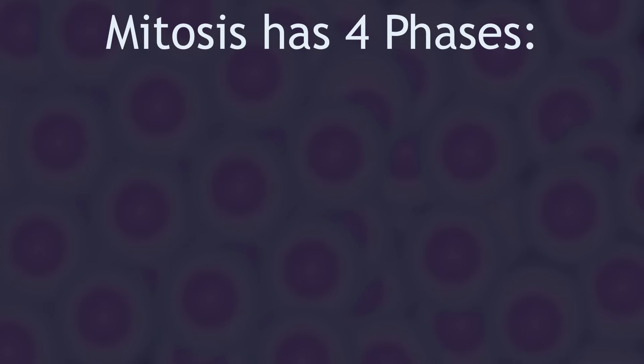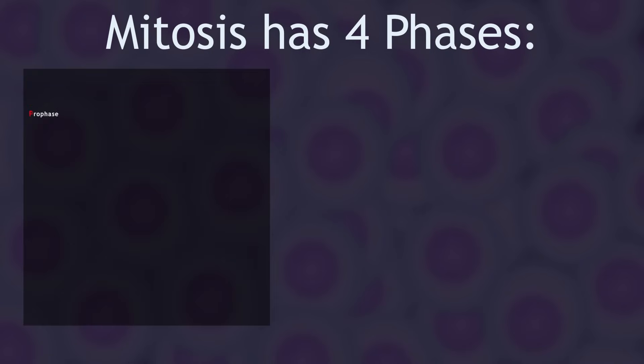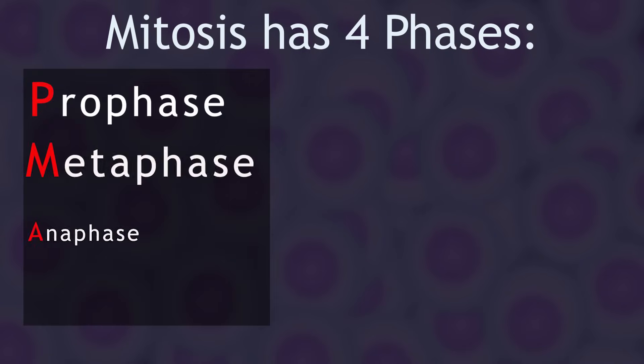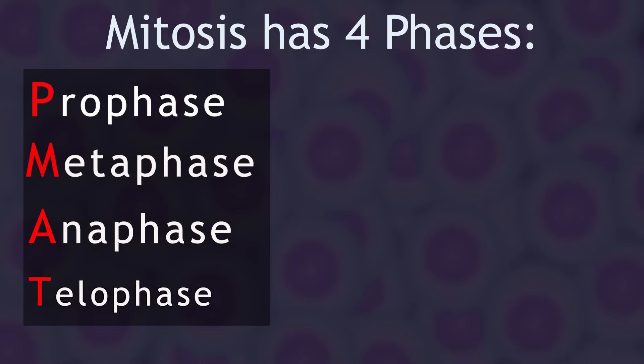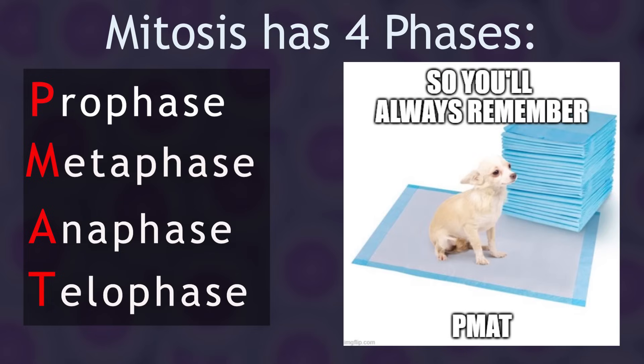Now let's begin mitosis, the process of dividing the cell's DNA into two identical daughter cells. Mitosis has four phases: prophase, metaphase, anaphase, and telophase — which you can remember as PMAT.